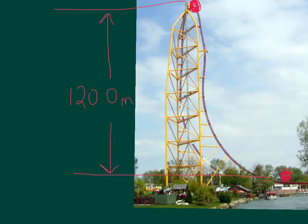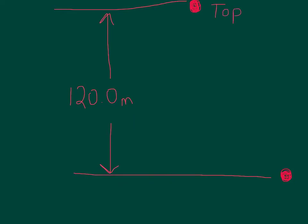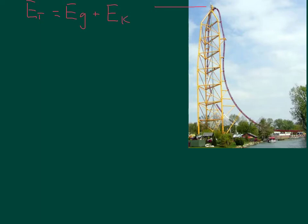When determining the overall speed reached, we need to know that the vertical drop is 120 meters. At the top of the hill, the total mechanical energy is going to be a combination of EG, which is gravitational potential energy, and EK, which is kinetic energy. We're going to assume that the roller coaster cart at the very top is at rest, even just for a split second. So if it's at rest, that means there's no kinetic energy, and the total mechanical energy is equal to mgh plus zero.